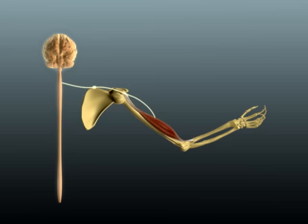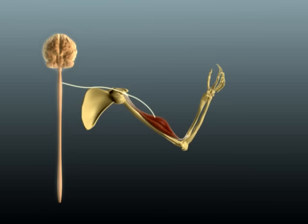Nerve impulses, also known as action potentials, travel from the brain or spinal cord to trigger the contraction of skeletal muscles.